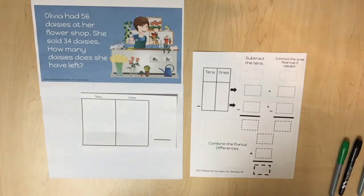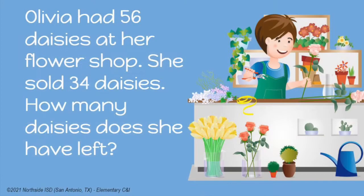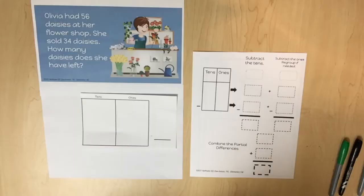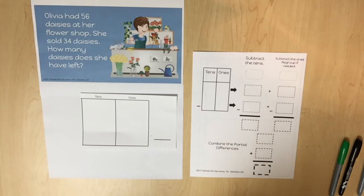Let's look at a real world scenario. Olivia had 56 daisies at her flower shop. She sold 34 daisies. How many daisies does she have left? To determine the number of daisies left, students will utilize the partial differences method and a pictorial representation.